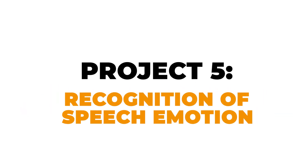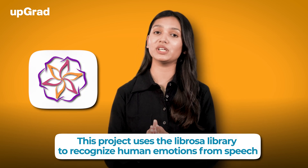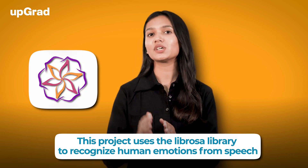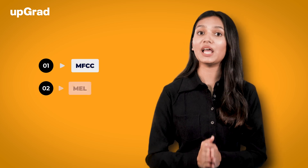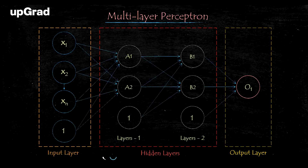Ready to level up? Let's dive into some intermediate level projects. Project 5: Recognition of Speech Emotion. If you want to learn the usage of different libraries, this project is perfect for you. It uses the Librosa library to recognize human emotions from speech, involving recognition from affective states using a combination of tone and pitch. You will work with features like MFCC, MEL and Chroma, and use the RAVDESS dataset. You will also develop an MLP classifier for this model, making it a challenging yet rewarding project.